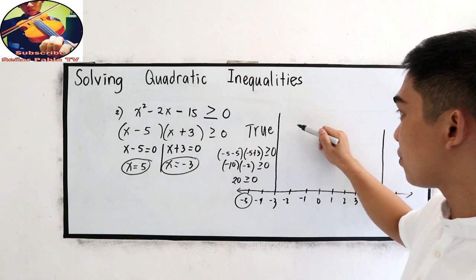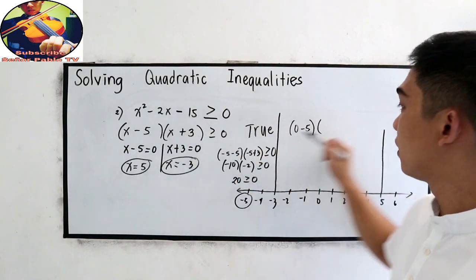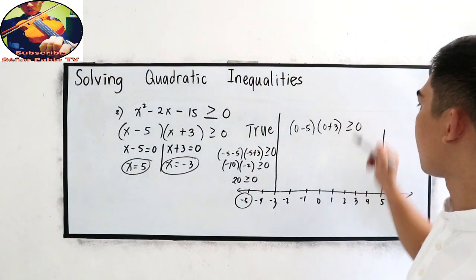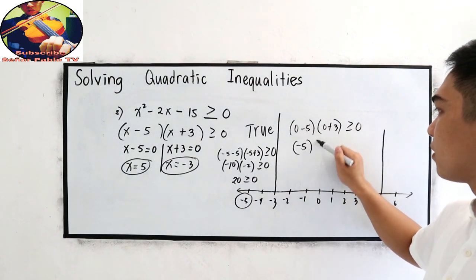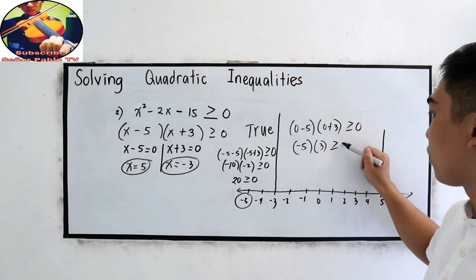So change x to 0. 0 minus 5, 0 plus 3, greater than or equal to 0. 0 minus 5, this is negative 5. 0 plus 3, positive 3, greater than or equal to 0.